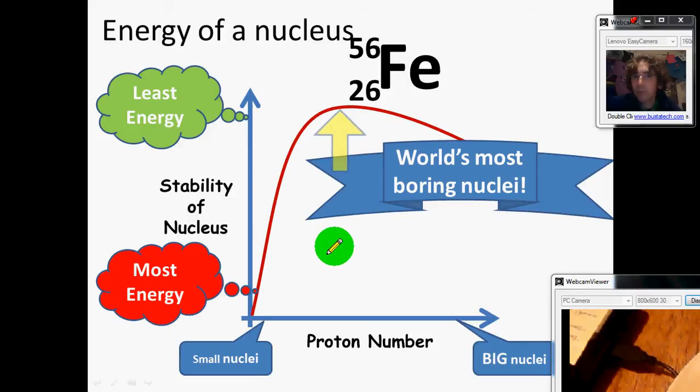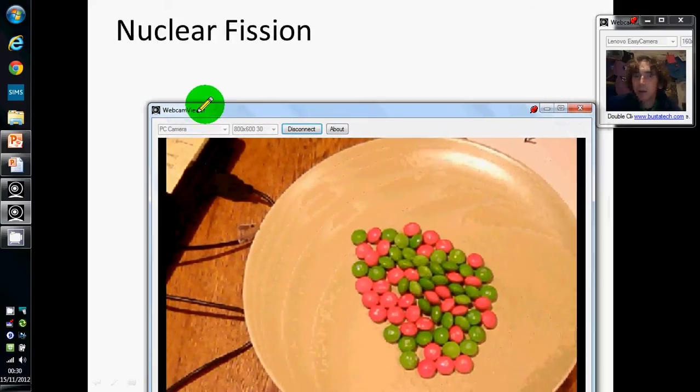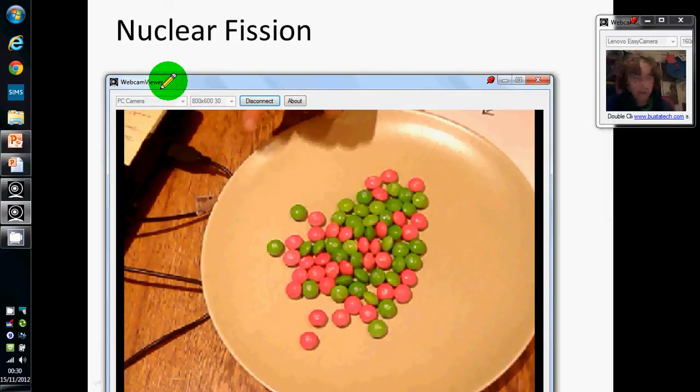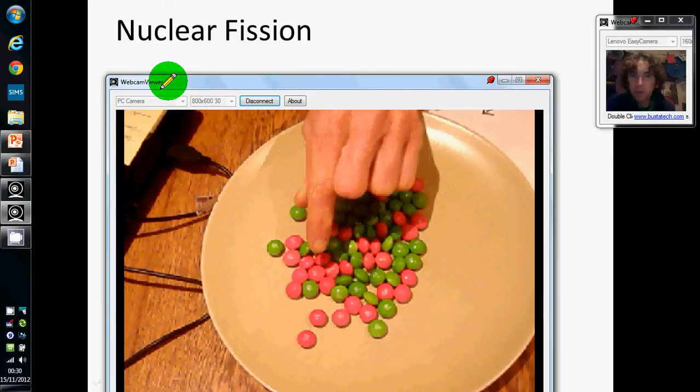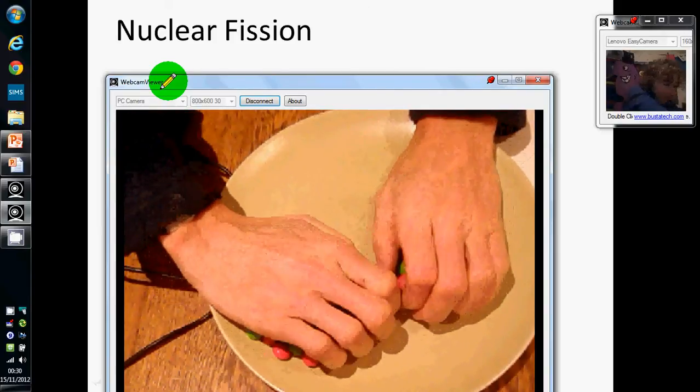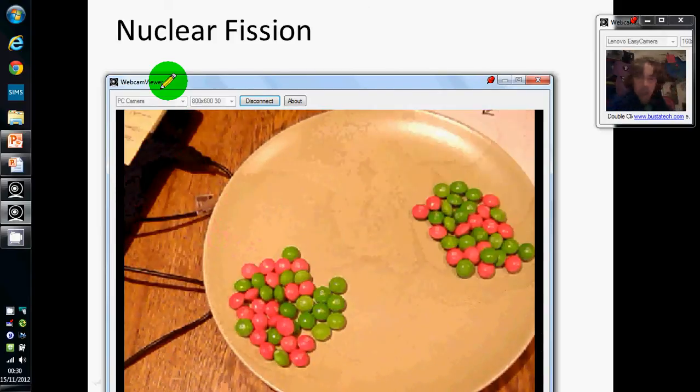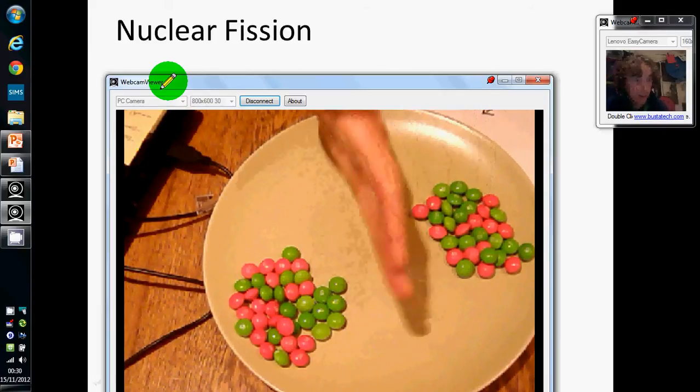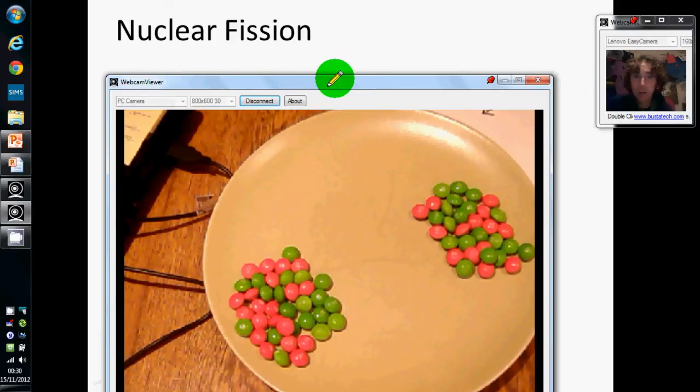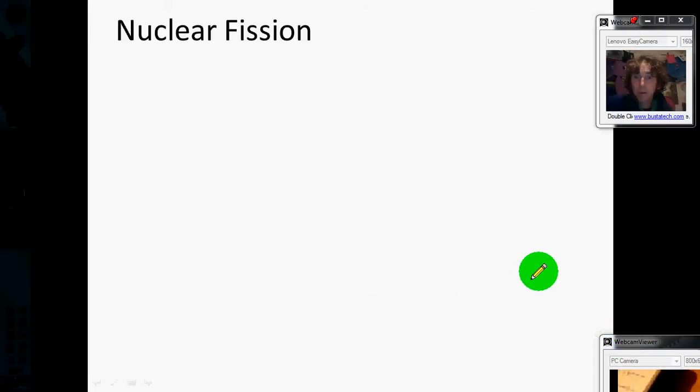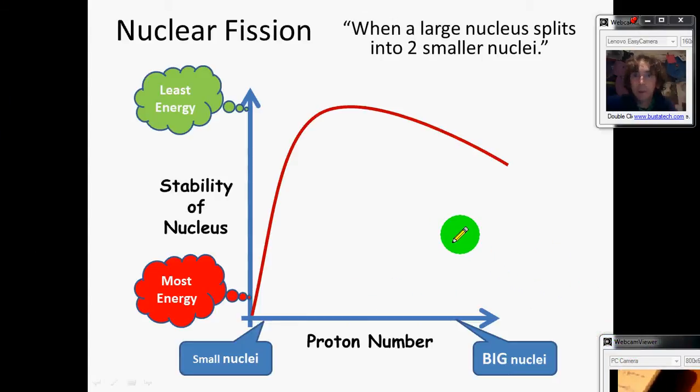Here's an example of nuclear fission. This big nucleus doesn't really get on with itself—the number of protons and neutrons is not a good stable combination. What can it do? Well, it could split in two. I haven't lost any protons, I haven't lost any neutrons, I've got the same numbers, but it's split in two. Let's see what it looks like on the graph.